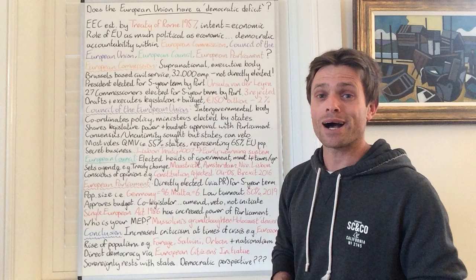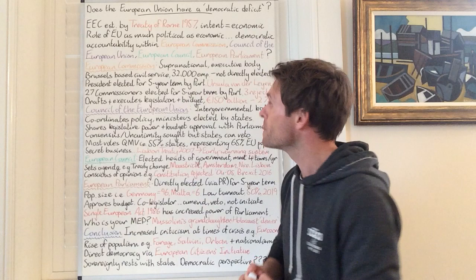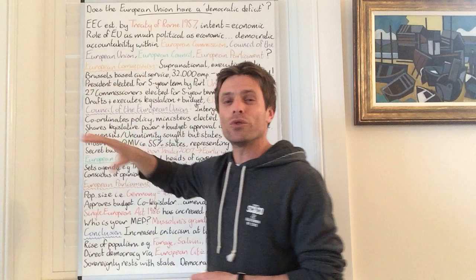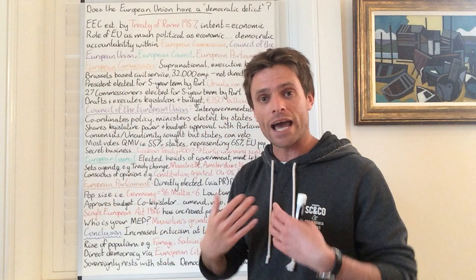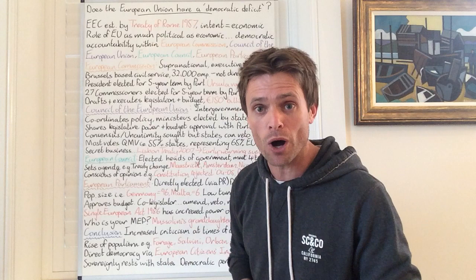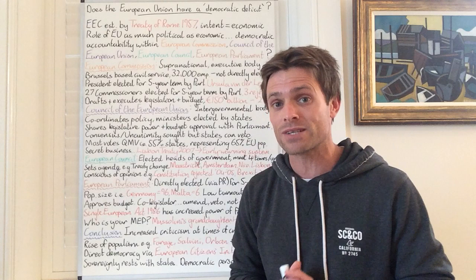The European Economic Community evolved significantly as a result of the Maastricht Treaty of 1992 — Maastricht being a city in the Netherlands. At that point the role of the European Union had become as much political as economic. The Maastricht Treaty enshrined the name change to European Union, and its role expanded to cover home affairs, foreign policy, security and justice. This expanded power lent greater credence to the accusation of a democratic deficit at the heart of the European project.